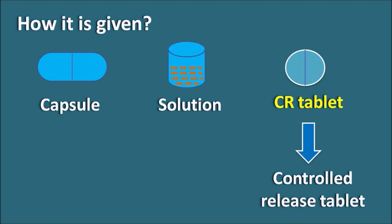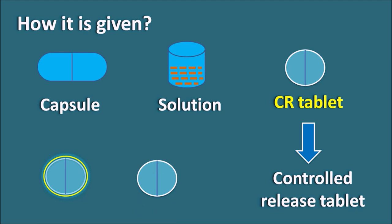It is very important that the CR tablet should not be broken into fragments before administration. CR tablets can be prepared in many ways; one procedure is to coat the tablet with a polymer, which results in the release of the drug in a controlled way. If the tablet is broken, the polymer coating is broken, resulting in immediate release of the drug, so controlled release cannot be achieved. Sometimes there is an inner core also coated with a polymer, and breaking the tablet again disturbs the polymer coating, resulting in loss of controlled release.